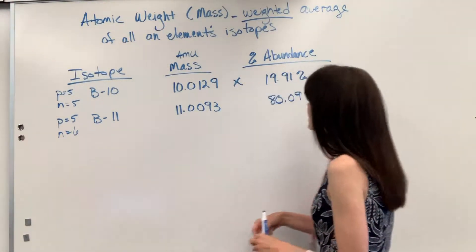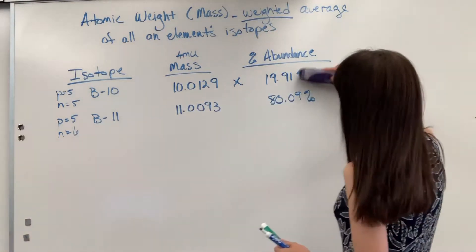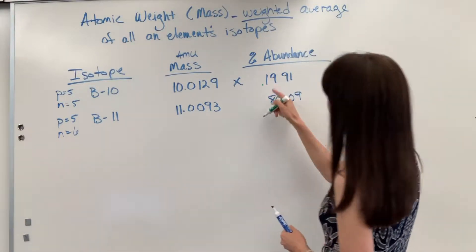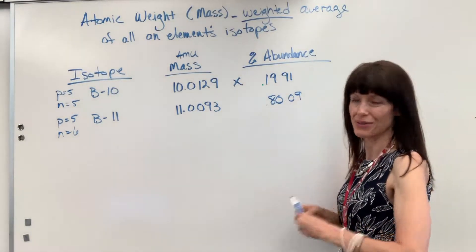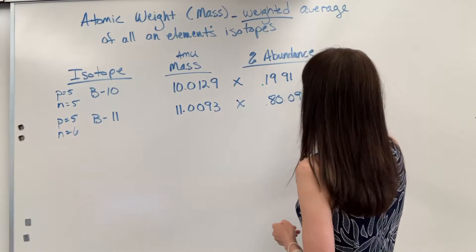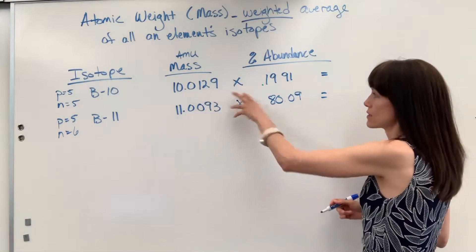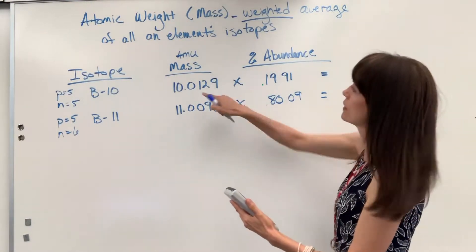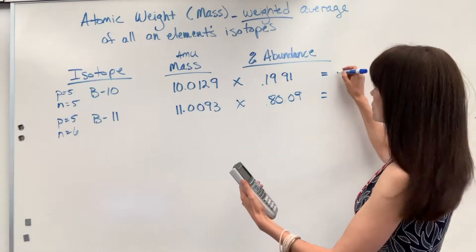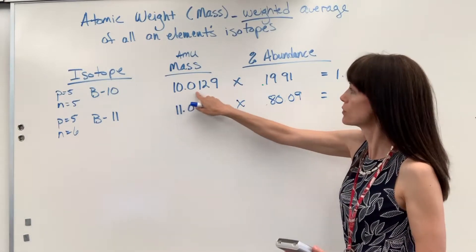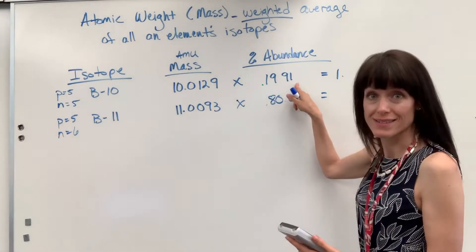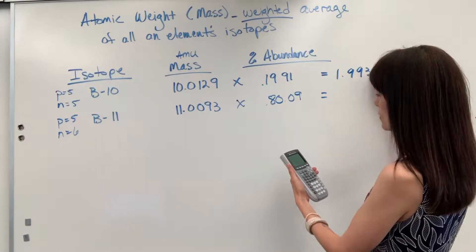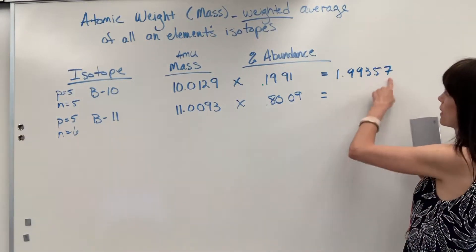So we're going to multiply the mass times the percent abundance. Now to do this, change it to a decimal. So I'm going to change this from the percentage to a decimal. This is going to be 0.1991 and 0.8009. So multiply these together, just like I would take a student's tests and assignments and multiply it by the weight. We're going to get a number right here. So I did this on my calculator. The 10.0129 times 19.91% is 1.994. And check it out, we've got six sig figs here and four sig figs here. So I'm going to carry this out to four sig figs.